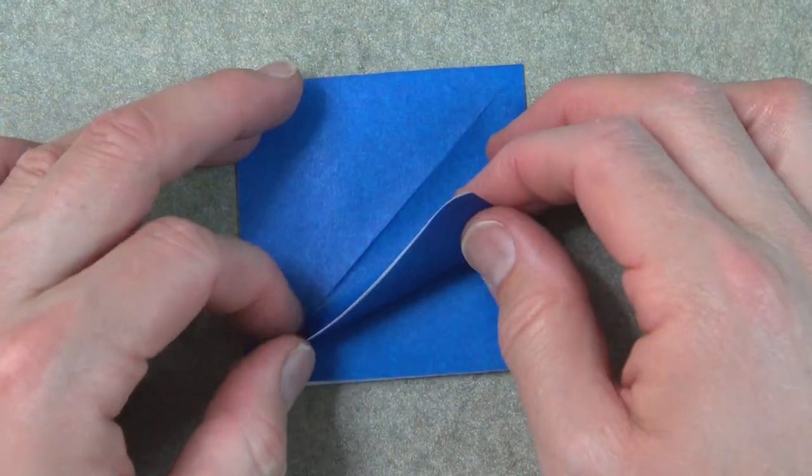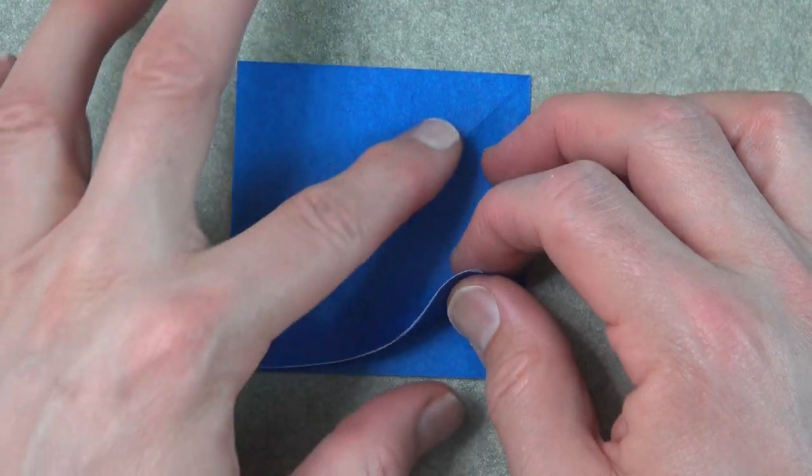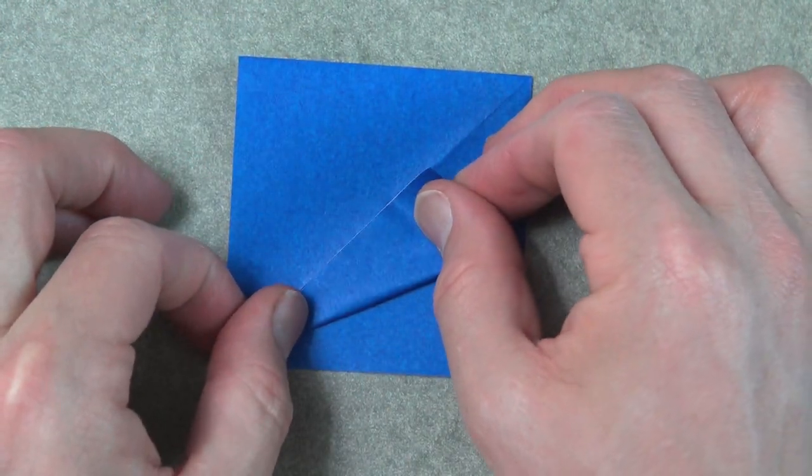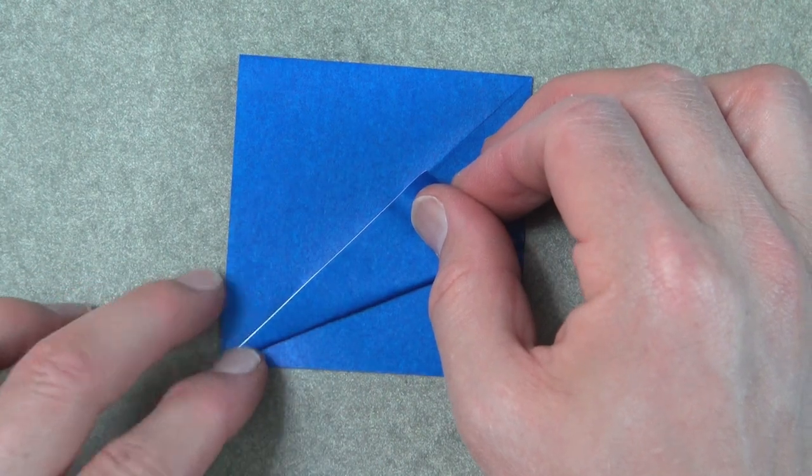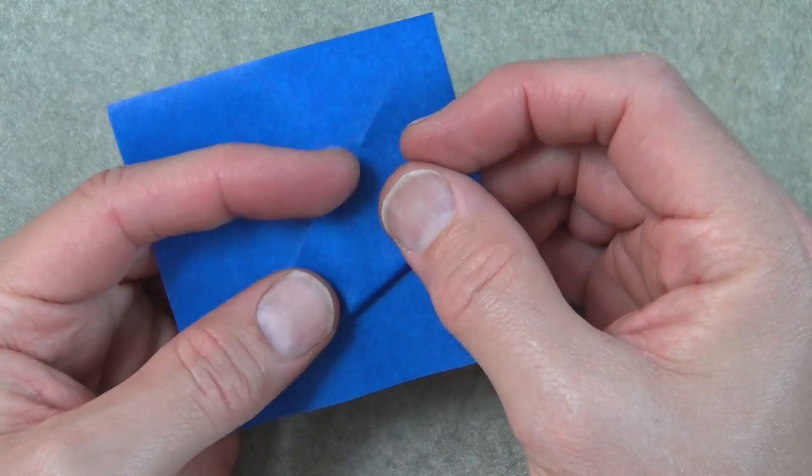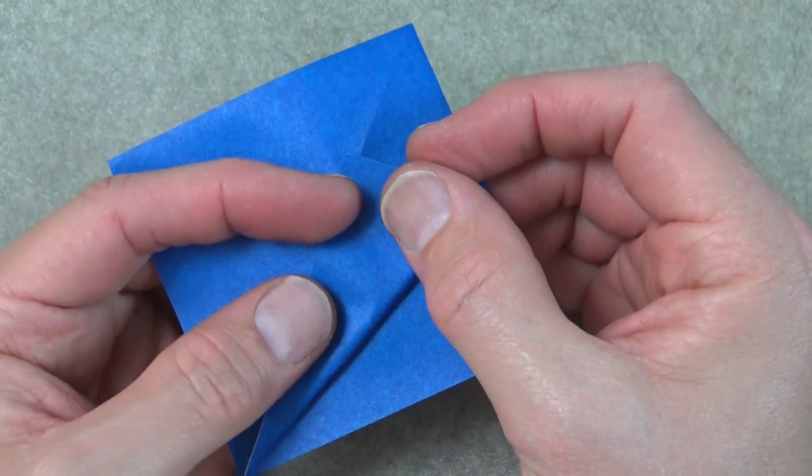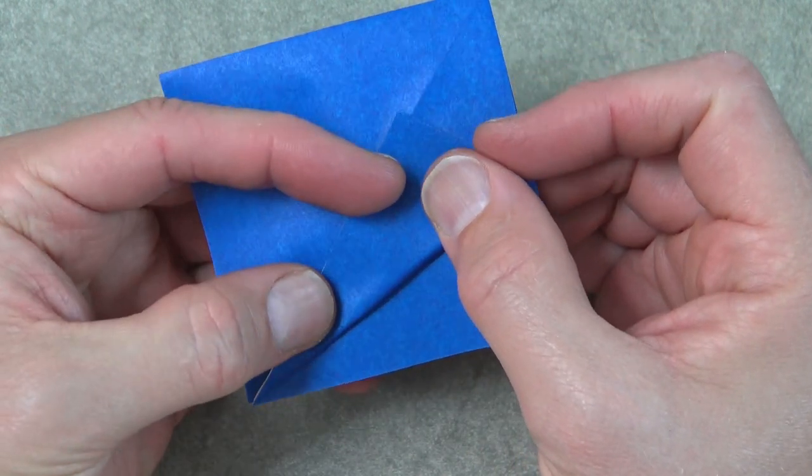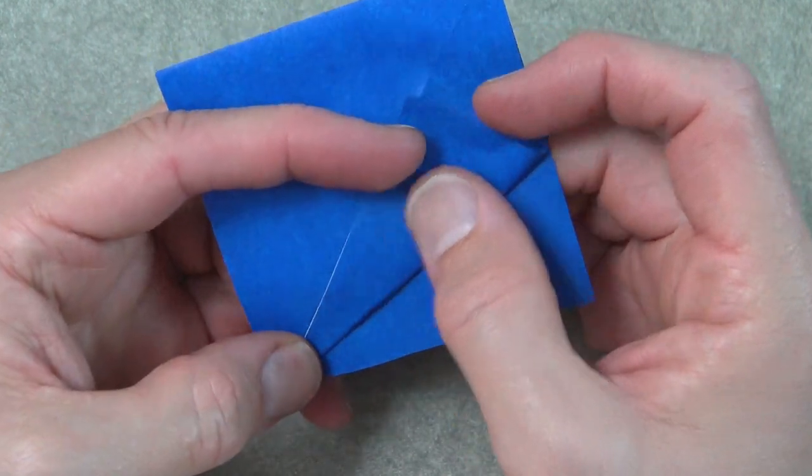Orient it so that the open side is nearest to you. Fold this front flap, both layers, to this crease. Actually, we want to go beyond that crease. We're folding on this point and we want this point to cross over that crease by one millimeter. So it's like that and make the fold.